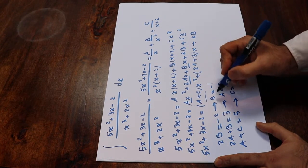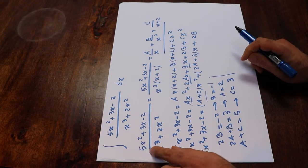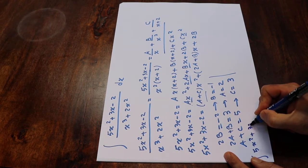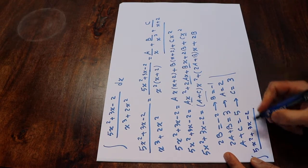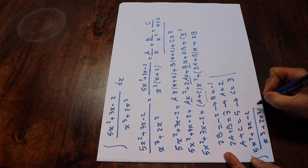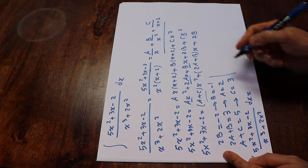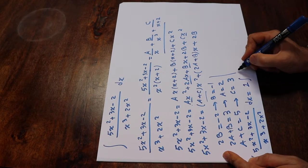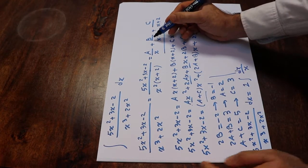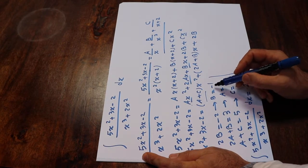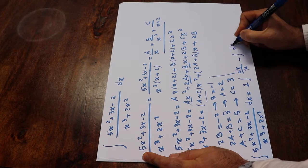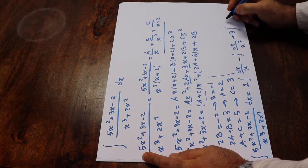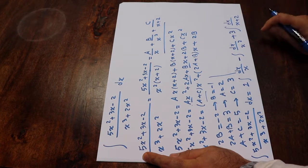Now substitute these values back. The integral of (5x² + 3x - 2)/(x³ + 2x²) dx equals 2 times the integral of dx/x, minus the integral of dx/x², plus 3 times the integral of dx/(x + 2).